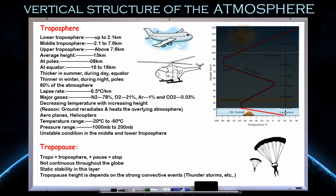The lapse rate is the rate at which temperature decreases with increasing height. For example, if you are at the ground with a temperature of 30 degrees Celsius and you go up one kilometer, the temperature decreases by 6.5 degrees Celsius — giving 23.5 degrees Celsius. The lapse rate in the troposphere is 6.5 degrees Celsius per kilometer. When temperature falls in this fashion with respect to height, that is the lapse rate.